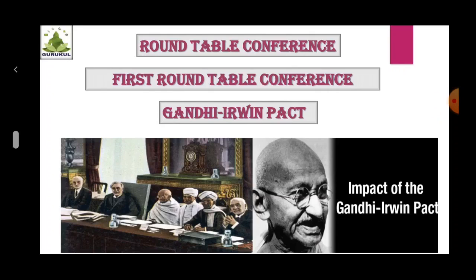Round Table Conference: In the opinion of British Prime Minister Ramsey MacDonald, while the Civil Disobedience Movement was going on, the constitutional issues regarding India should be thought over. For this purpose, he organized a conference at London known as the Round Table Conference. In the period between 1930 to 1932, three Round Table Conferences were organized.